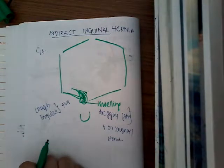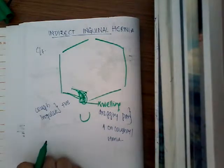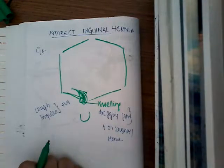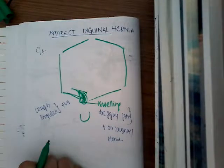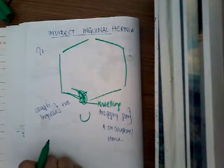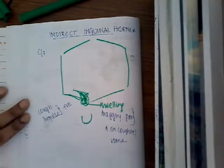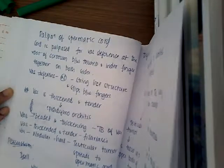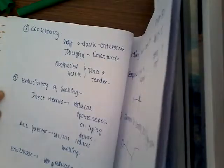In indirect inguinal hernia or direct inguinal hernia, we do some tests like the Zeman test, the internal ring occlusion test, and the ring invagination test. These are the main tests which we perform. Let me show you these tests from the hernia lecture.